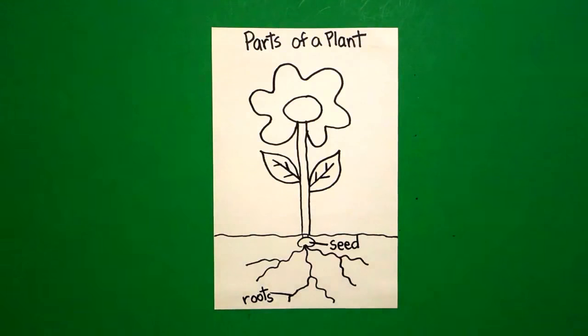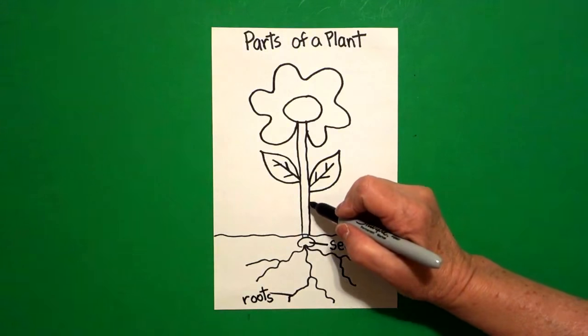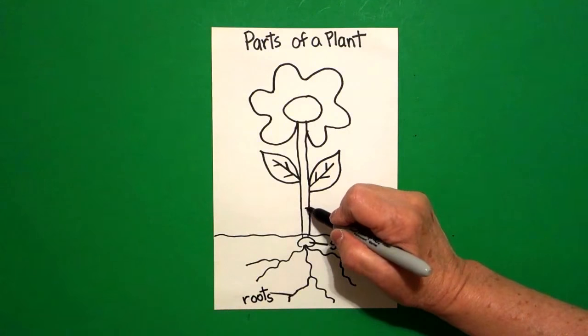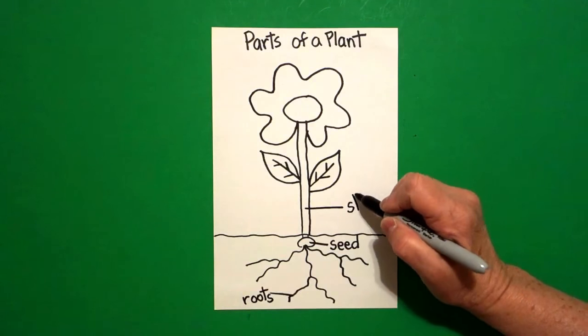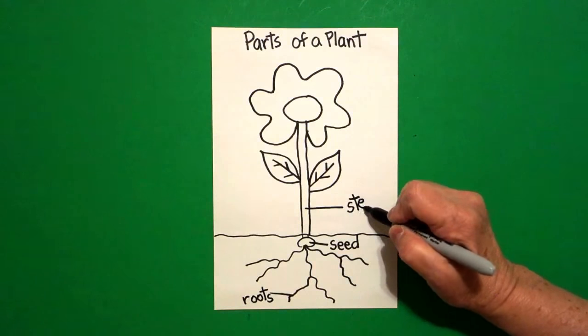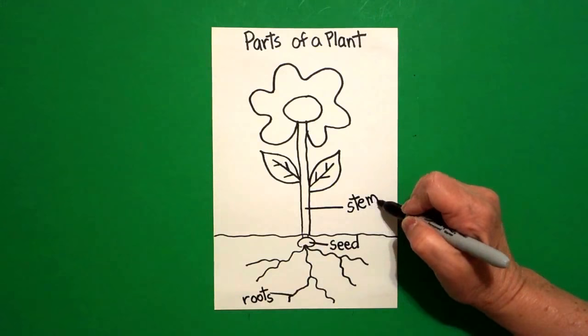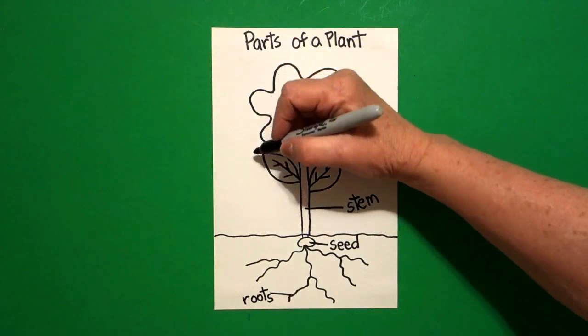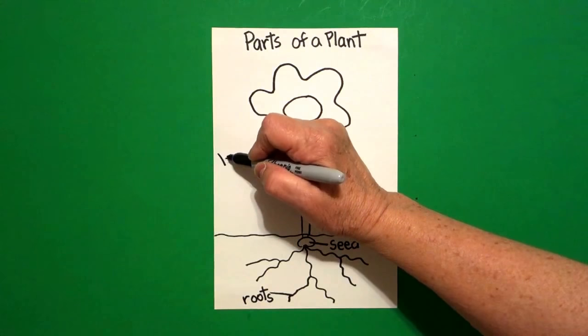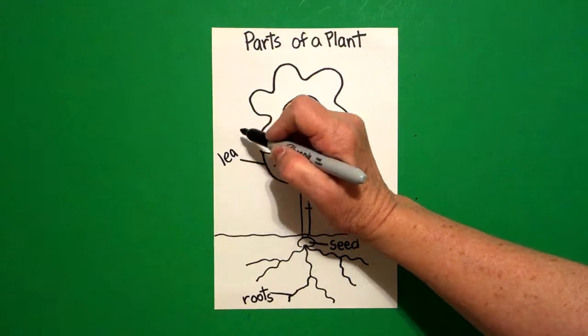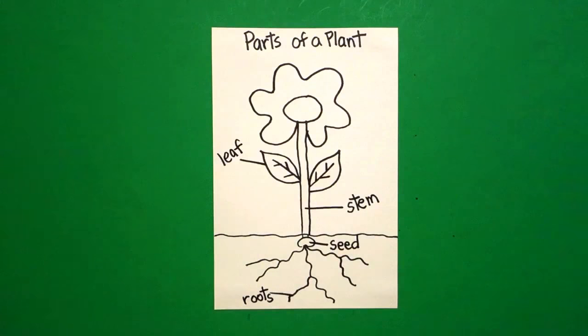I come up and on this section right here, I draw a straight line out and I write the word stem, S, T, E, M. Then I come over to this side or you could use the other side and I write the word leaf, L, E, A, F.